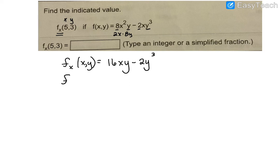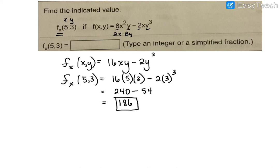So now we're going to evaluate that for the value of x and y that they gave us. So we're going to have a 16 times a 5 times a 3, and then we have minus a 2 times a 3 to the third. So 16 times 5 times 3 will give us 240. 3 cubed would be 27 times 2 is 54. So when I take 240 and I subtract 54, I'm left with 186.